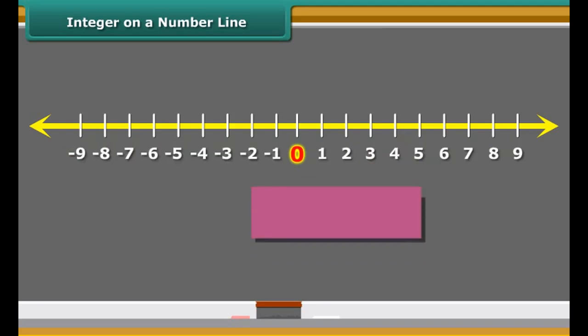Here to mark plus 2 on the number line, we move 2 points to the right of zero. Similarly, to represent minus 5, we move 5 points left of zero.